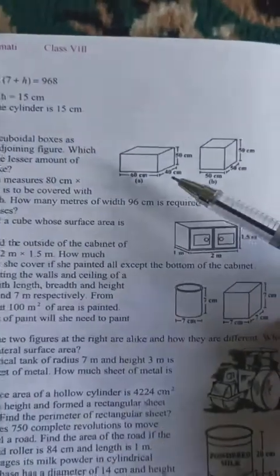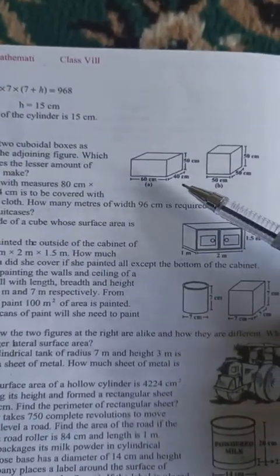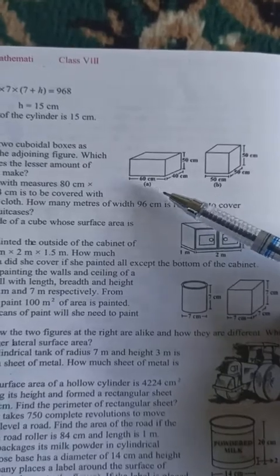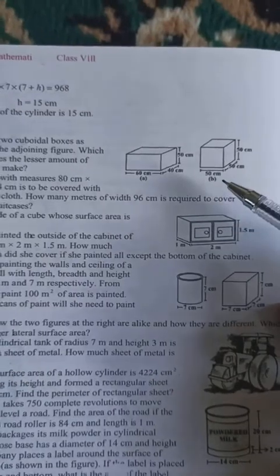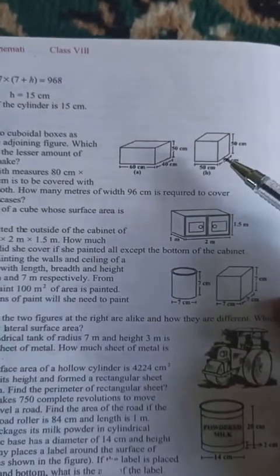The first cuboidal box has length 60 cm, breadth 40 cm, and height 50 cm. The second cubical box has length, breadth, and height all 50 cm.